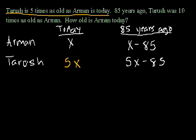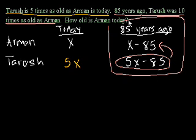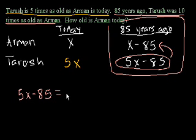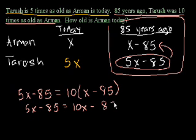And now we have this extra piece of information, which tells us that 85 years ago, Tharoosh was 10 times as old as Armand. So this number is going to be 10 times more than that number. 85 years ago, Tharoosh — which is 5x minus 85 — was 10 times older than Armand, who was x minus 85. So we write that out algebraically: 5x minus 85 is equal to 10 times (x minus 85).